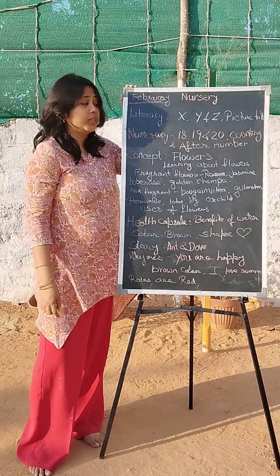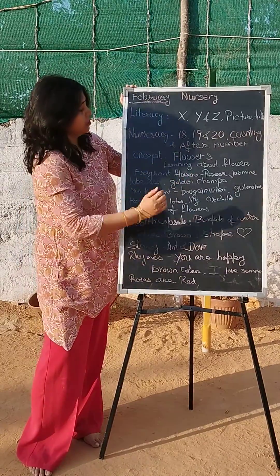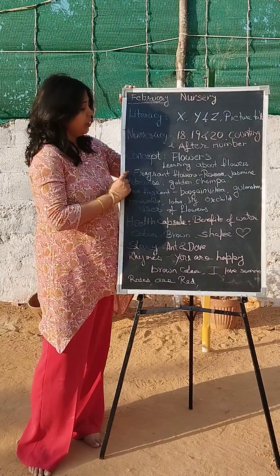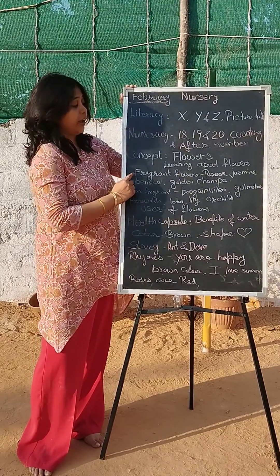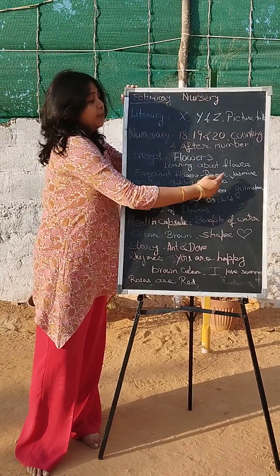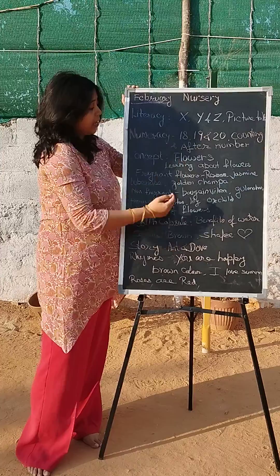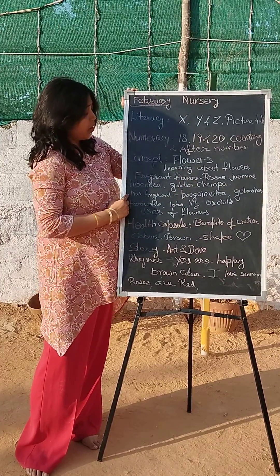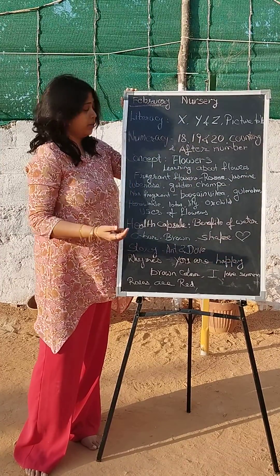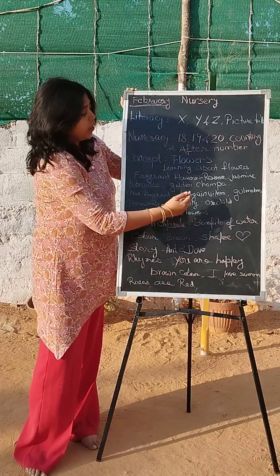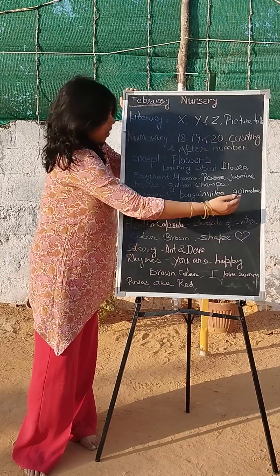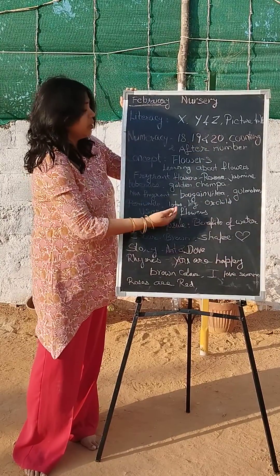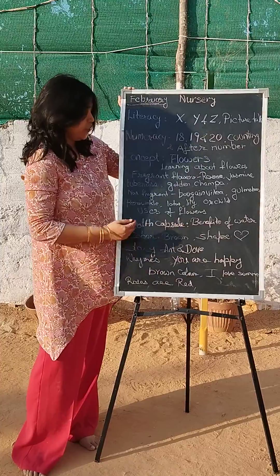This month we are going to teach you about flowers. You will learn about fragrant flowers — for example, rose, jasmine, and golden champa. And you will learn about non-fragrant flowers — for example, bougainvillea, gulmohar, periwinkle, lotus, lily, and orchid.